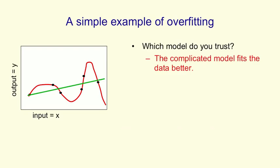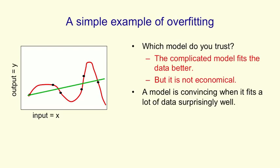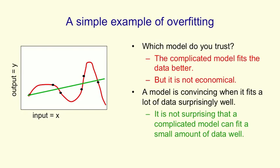The complicated model certainly fits the data much better. But it's not economical. For a model to be convincing, what you want it to do is be a simple model that explains a lot of data surprisingly well. And the polynomial doesn't do that. It explains these six data points, but it's got six degrees of freedom. So wherever these data points were, it would be able to explain them. We're not surprised that a model this complicated can fit that data very well, and it doesn't convince us that this is a good model.